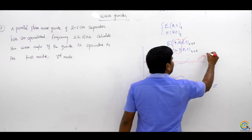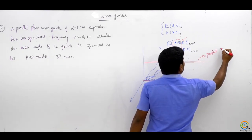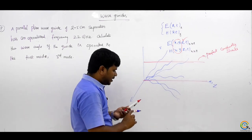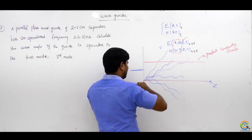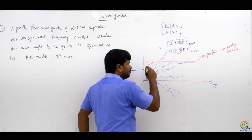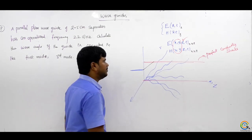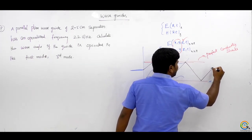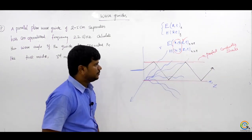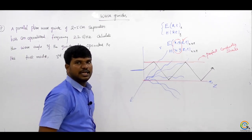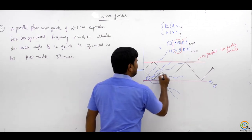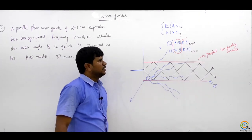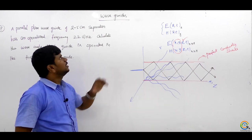What is this arrangement? It is perfect conducting sheets. If I put a perfect conducting sheet, the EM wave will be reflected from the perfect conducting material. It will be reflected repeatedly and go in the required direction. Even though it takes a zigzag path, it goes to the required direction.